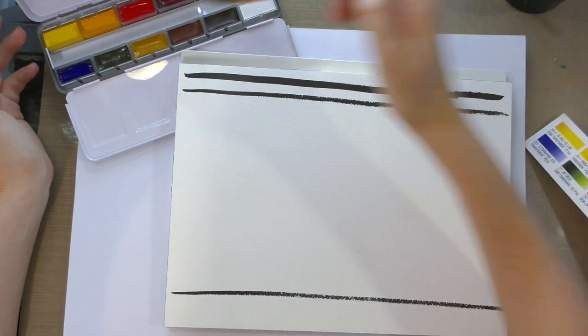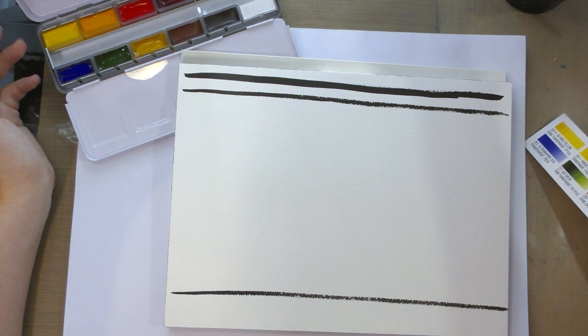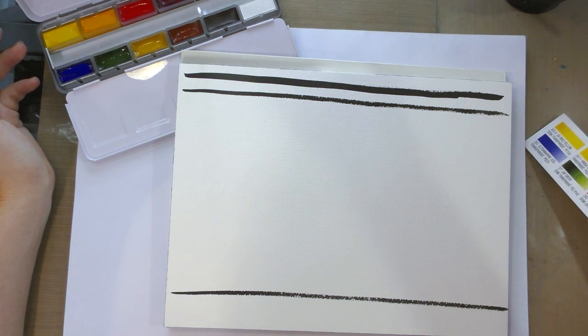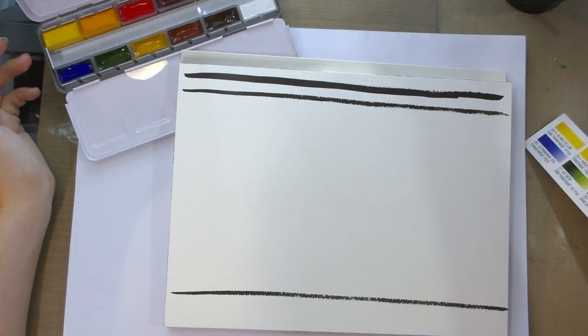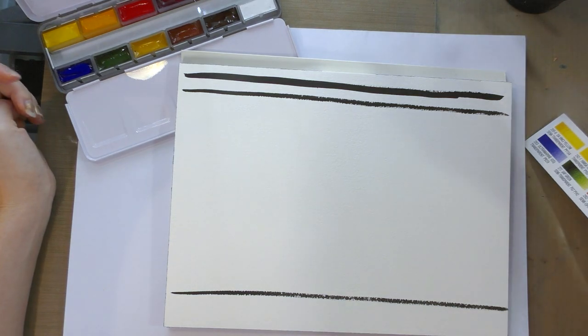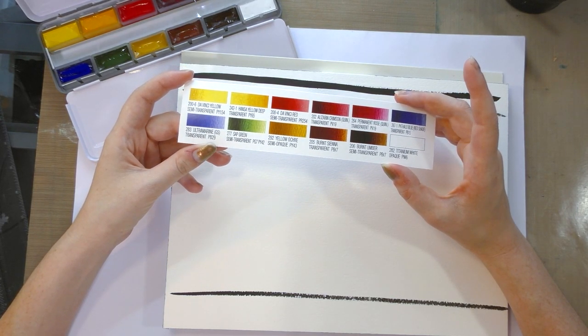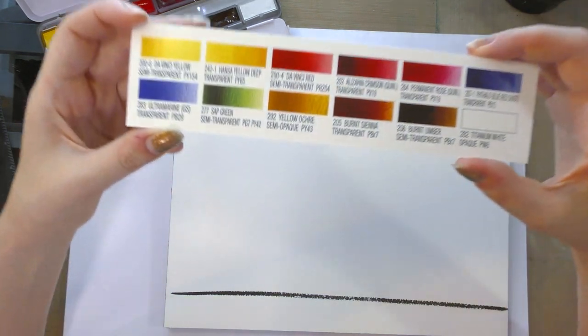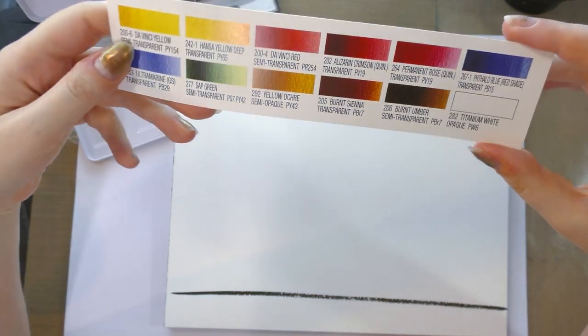We have 12 colors we're going to be looking at today. We have DaVinci yellow, which is semi-transparent. We have Hansa yellow deep, which is transparent. We have DaVinci red, which is semi-transparent. We have alizarin crimson. This is a quinacridone alizarin crimson, which is transparent. We have a quinacridone permanent rose, which is transparent. We have a phthalo blue red shade, which is transparent. Ultramarine, which is transparent. Sap green, which is semi-transparent. Yellow ochre, which is semi-opaque. Burnt sienna, which is transparent. Burnt umber, which is semi-transparent. And titanium white, which is opaque.